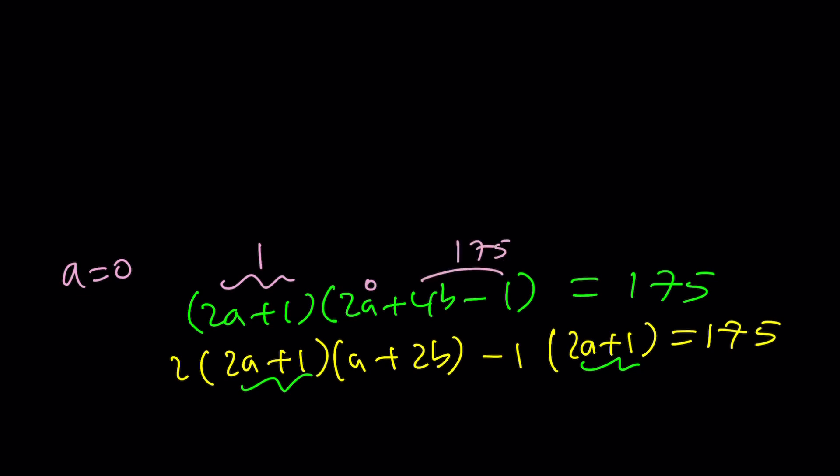That means 4b is 176, which means b is equal to 176 divided by 4, which is 44. So if a is 0, b will be 44.